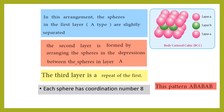In the ABA arrangement (body-centered cubic): the spheres of the first layer A are slightly separated. The second layer B is formed by arranging spheres in the depressions between spheres of layer A. The third layer repeats the first layer, giving an ABAB pattern. Each sphere touches 8 neighbors, so the coordination number is 8. This ABA arrangement gives a body-centered cubic structure with the pattern A, B, A, B, A.